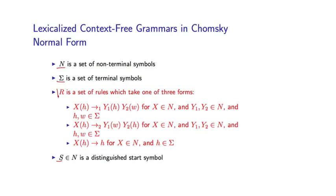There are three different cases. Let's go through the simplest case first. We can have a rule where X is a non-terminal and H is a word, where XH rewrites as H.